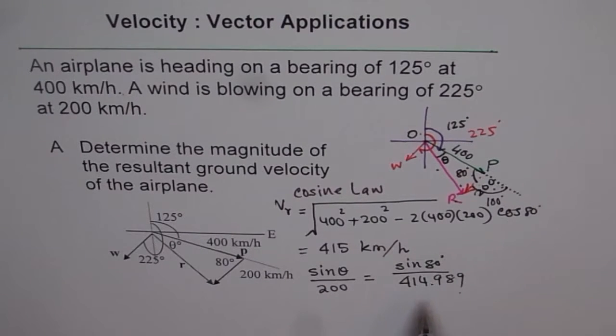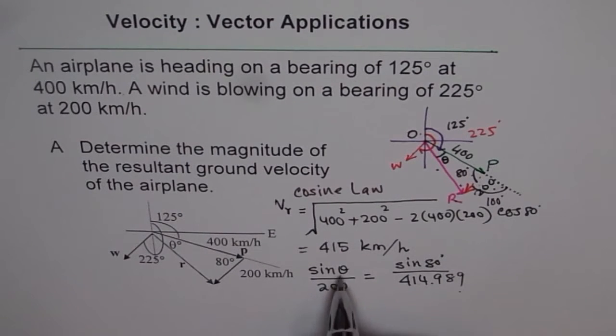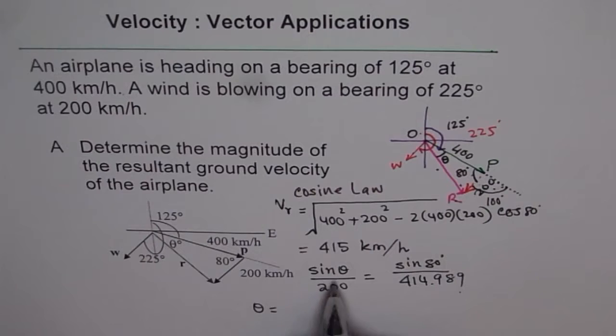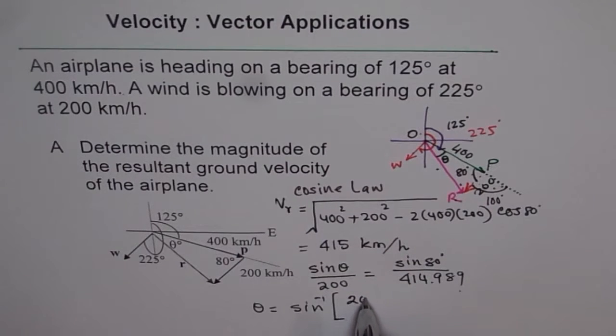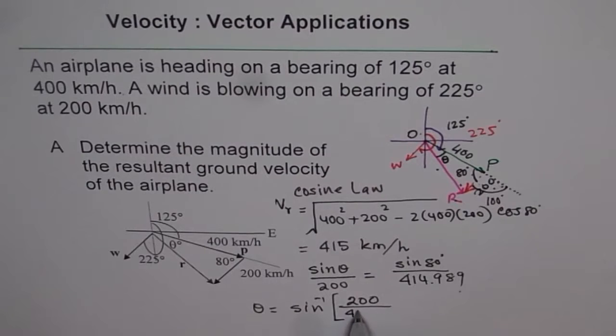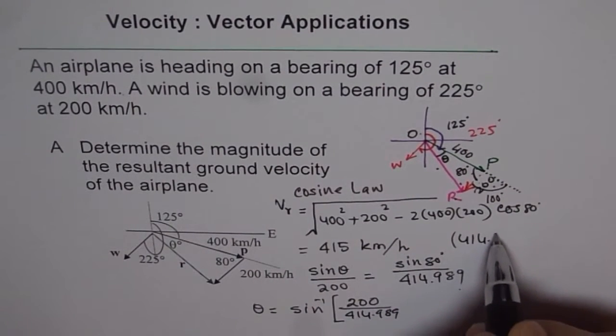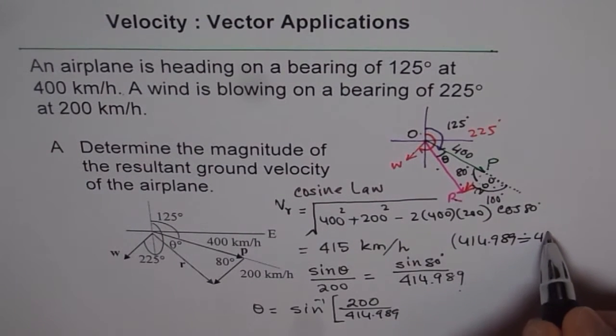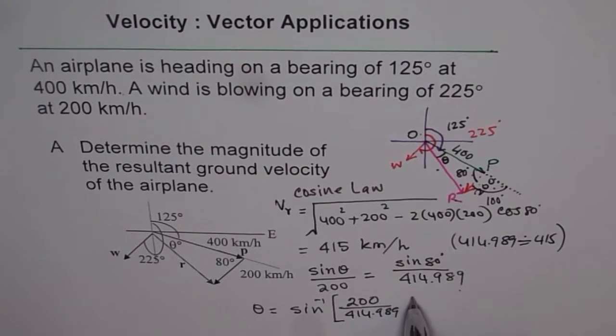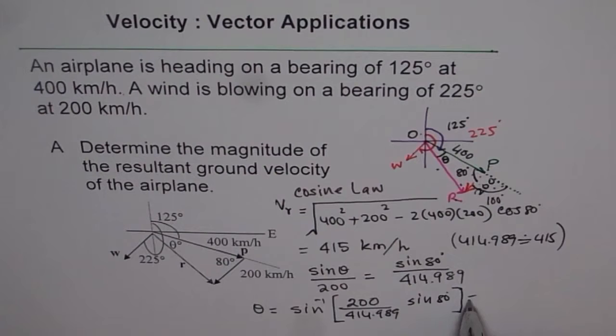So in this case, 415 was good enough, but my recommendation is that you should write 4 decimal places, then round and use that 4 decimal places here to get accurate answers. Now, so from here, what is theta equals to? Theta equals to sine inverse of, so multiply by 200 all these things. So you get 200 divided by this number, 414.989. Why I am using this? For accuracy. Actually when I calculated, this was 414.989 which I rounded to 415. Now, times sine of 80 degrees. And then you calculate the angle using the calculator.